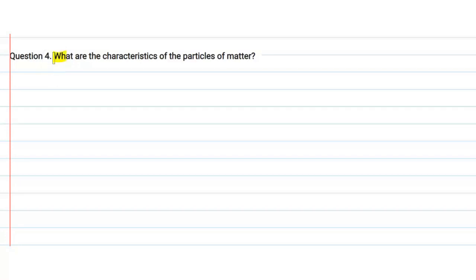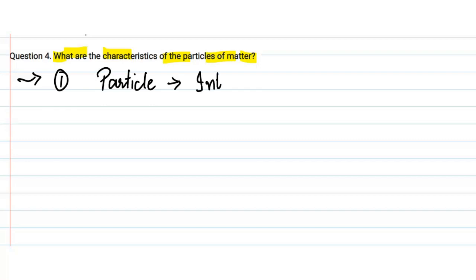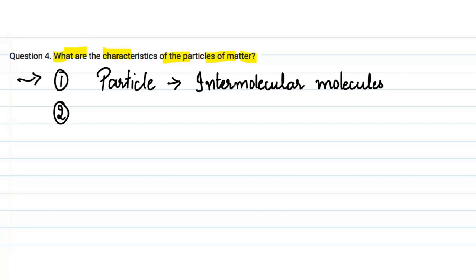The question asks: what are the characteristics of particles of matter? The first characteristic is that the particles of matter have intermolecular spaces between them. By the term intermolecular spaces, we mean that there are spaces between the molecules of the matter.